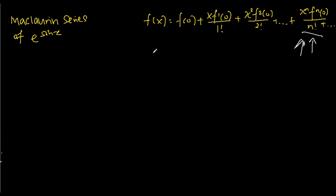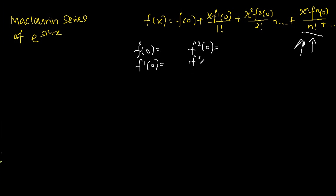First off, we have to find the function evaluated at x equals zero, the function differentiated one time and evaluated at x equals zero, the function differentiated two times and evaluated at x equals zero, the function differentiated three times and evaluated at x equals zero, and the function differentiated four times and evaluated at x equals zero.